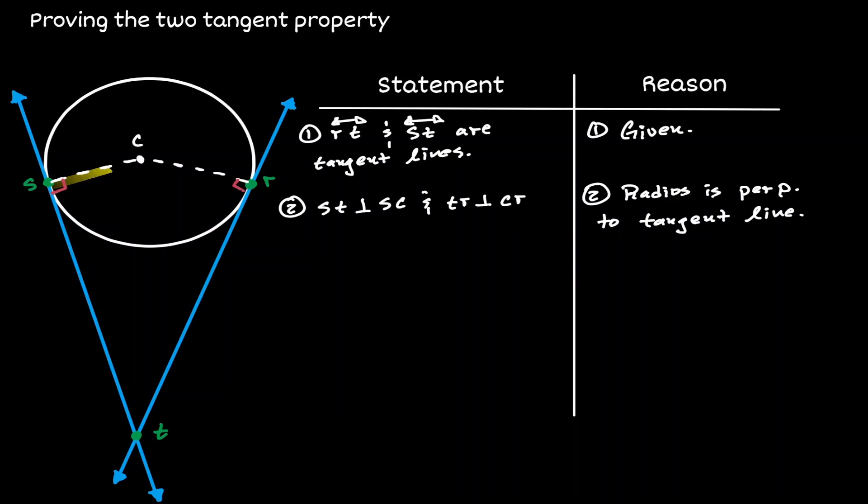In addition, SC and CR are both the radius of the circle, they are congruent to each other.